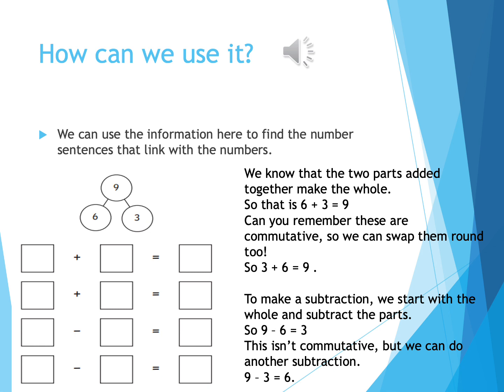We know if we start with the addition questions at the bottom, we know that two parts added together equal the whole. So our two parts, 6 and 3, add those together, 6 plus 3 equals 9.